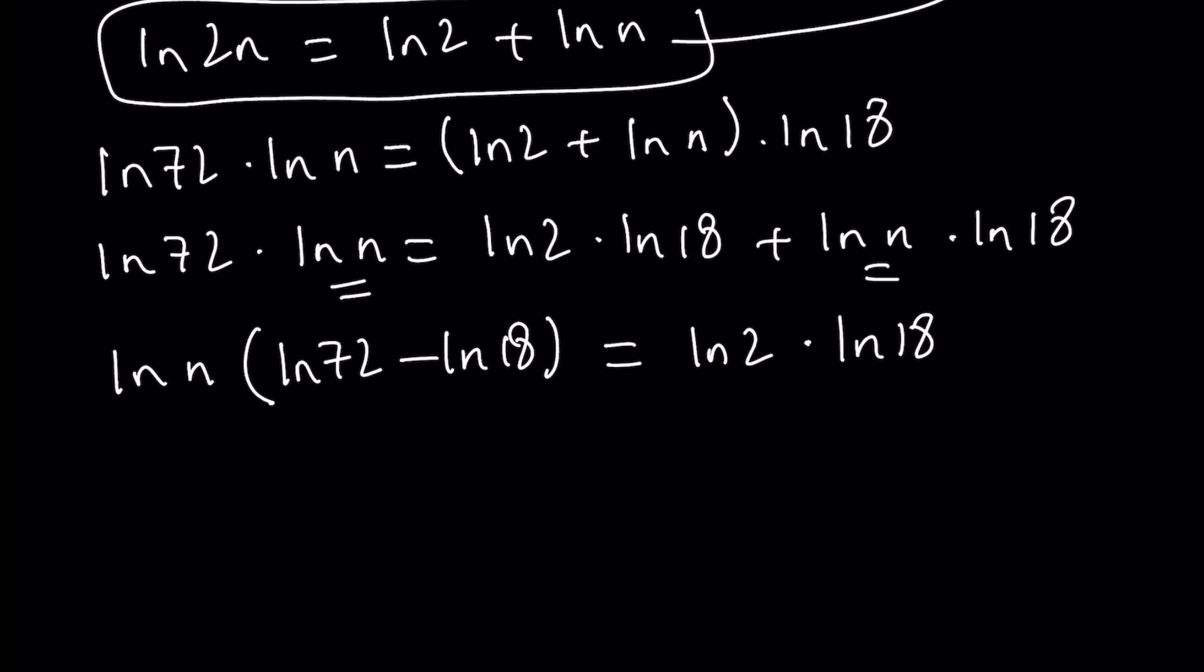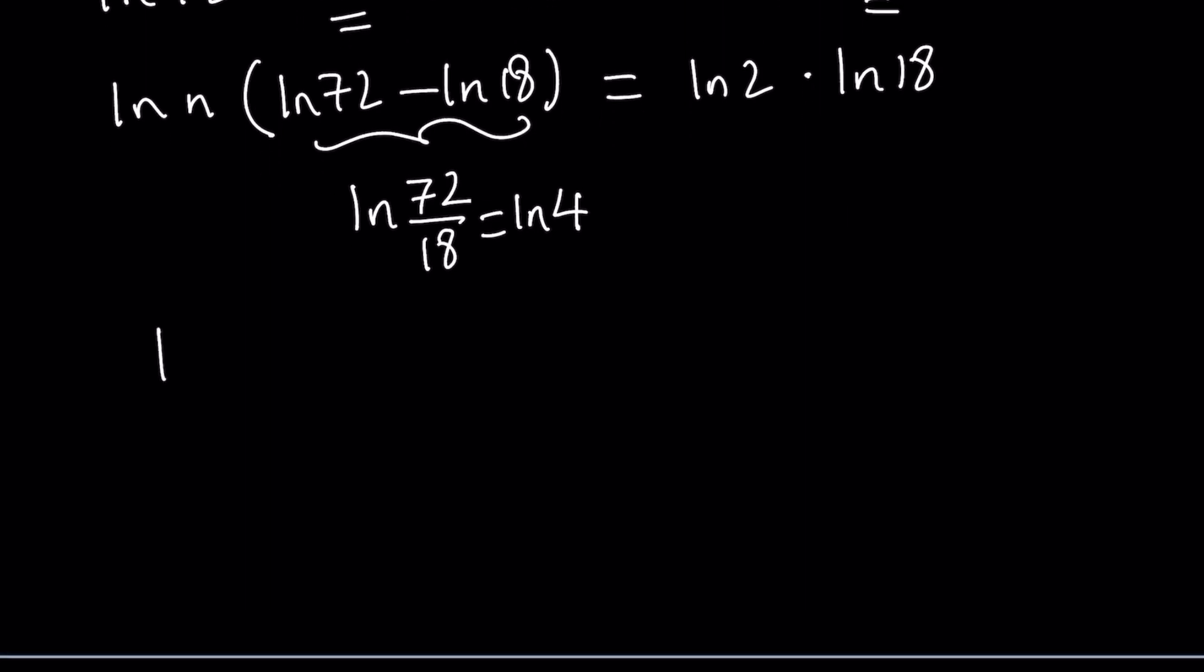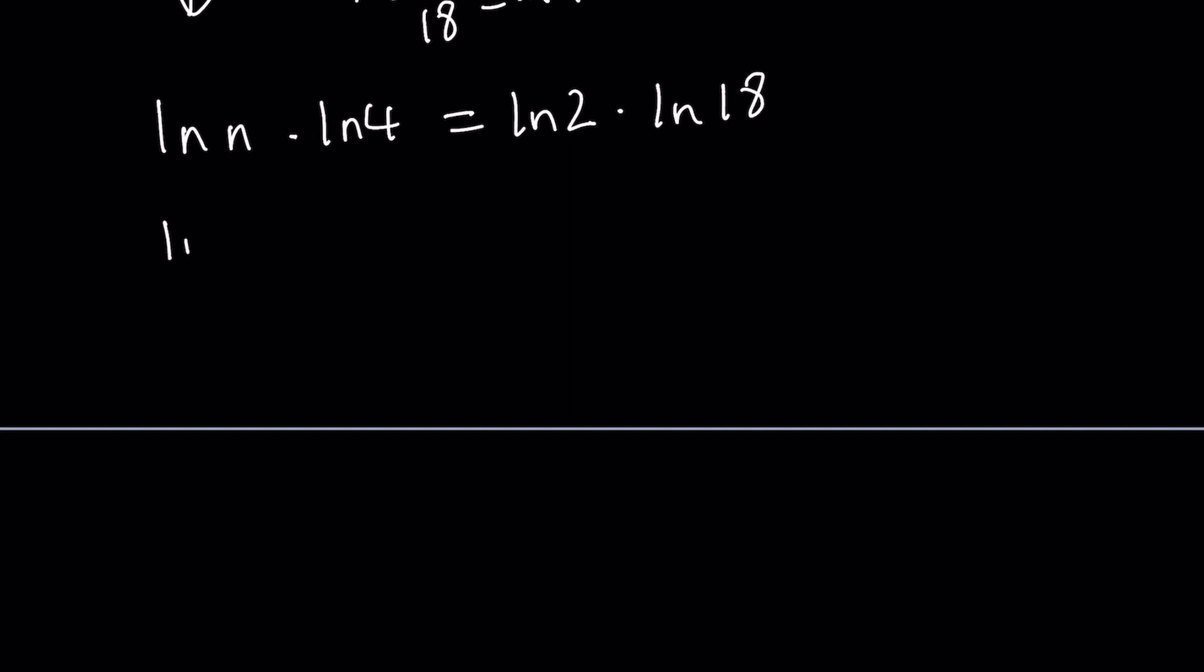Since we're looking for ln n, we're going to divide both sides by this difference. But first, we can simplify this. This can be written as ln 72 over 18, which is ln 4 because 72 divided by 18 equals 4. So our expression simplifies as ln n times ln 4 equals ln 2 times ln 18. At this point, we're going to isolate ln n.